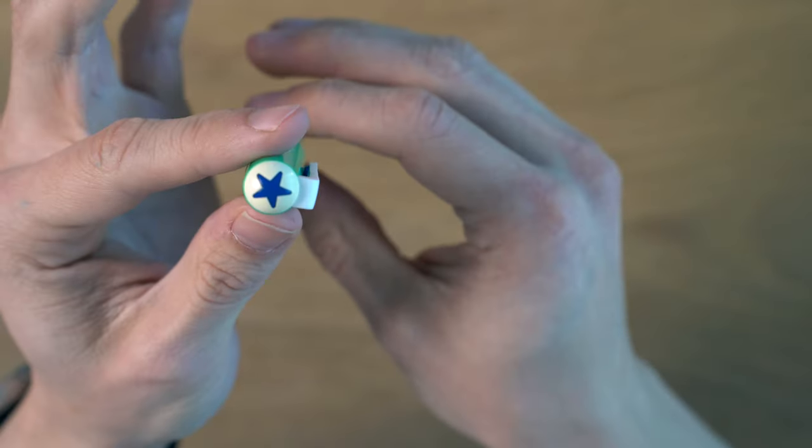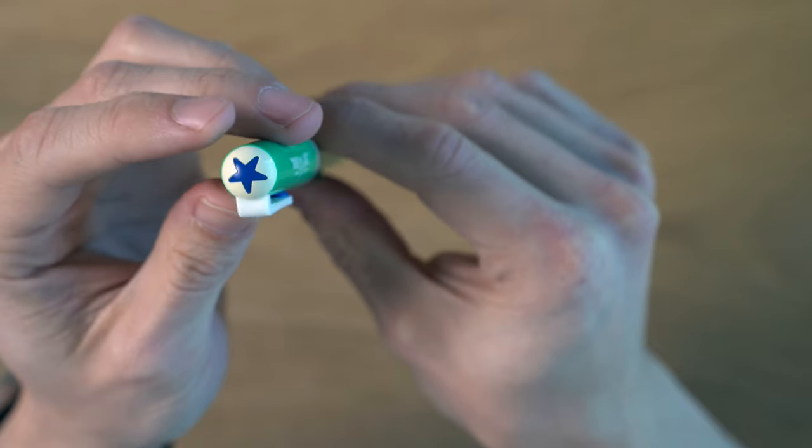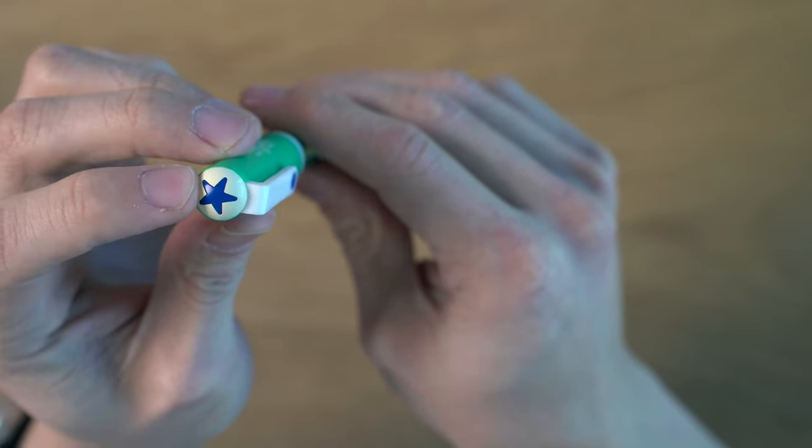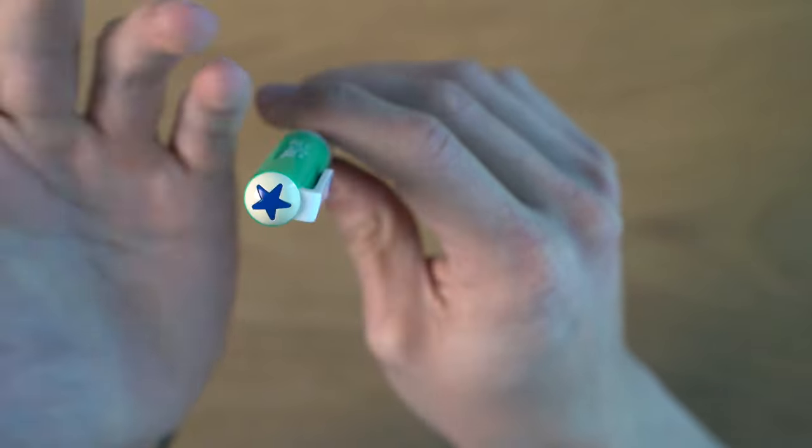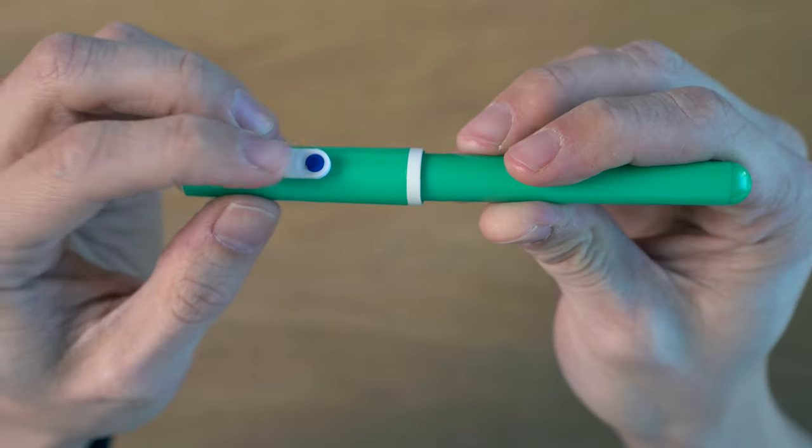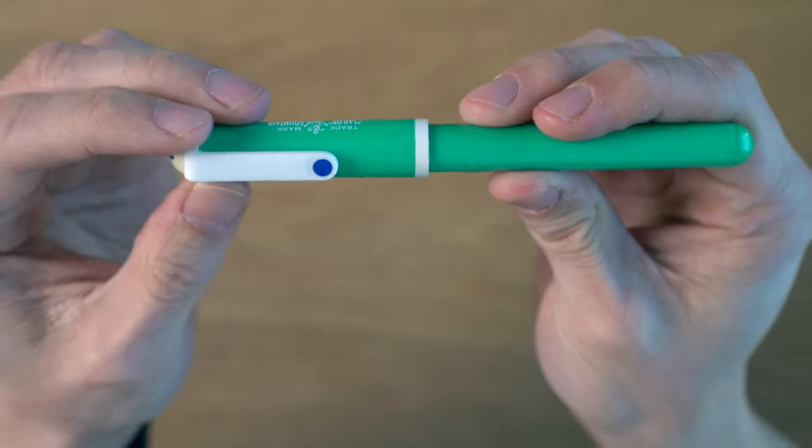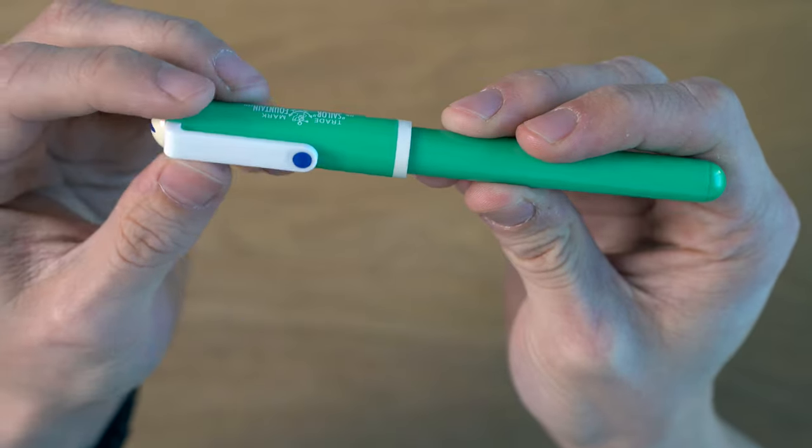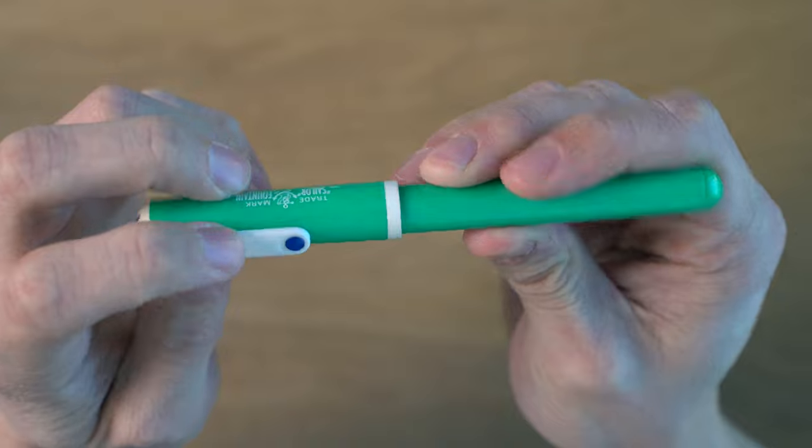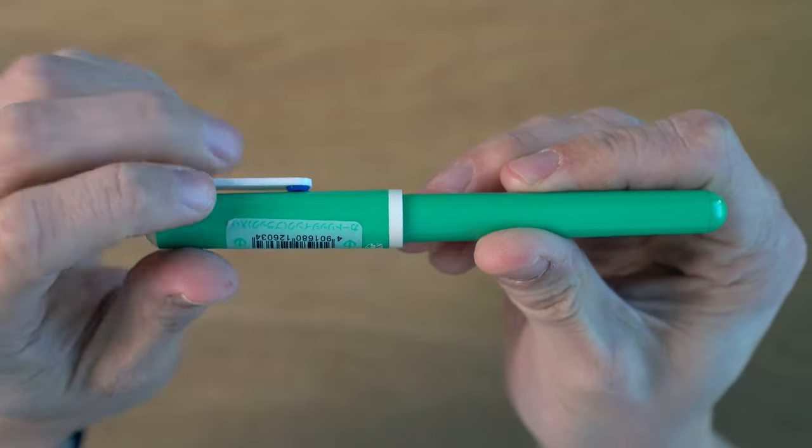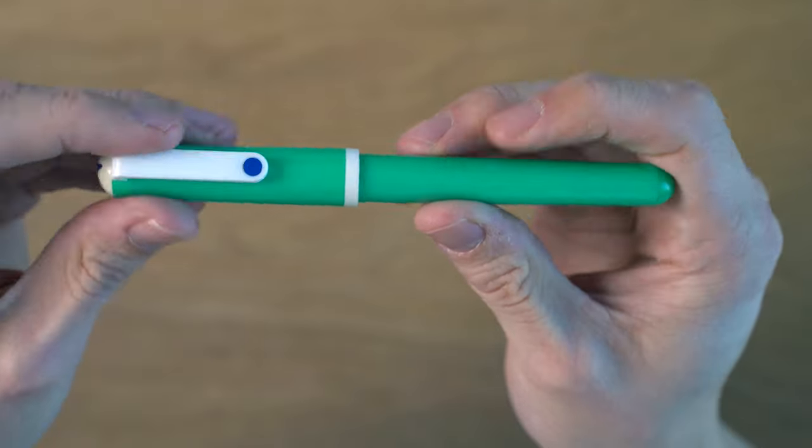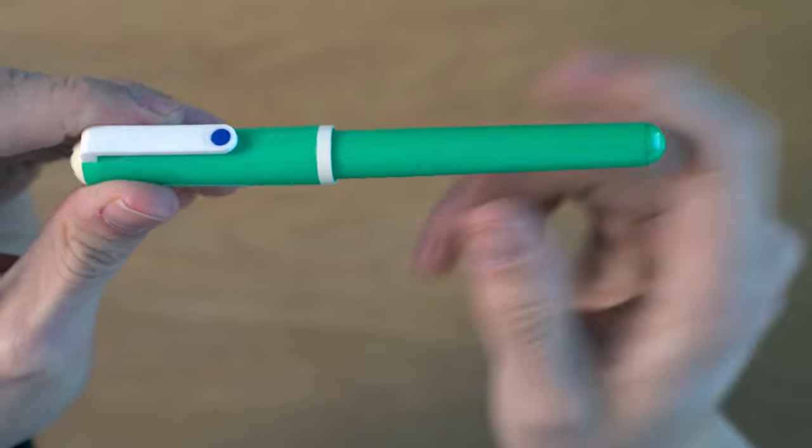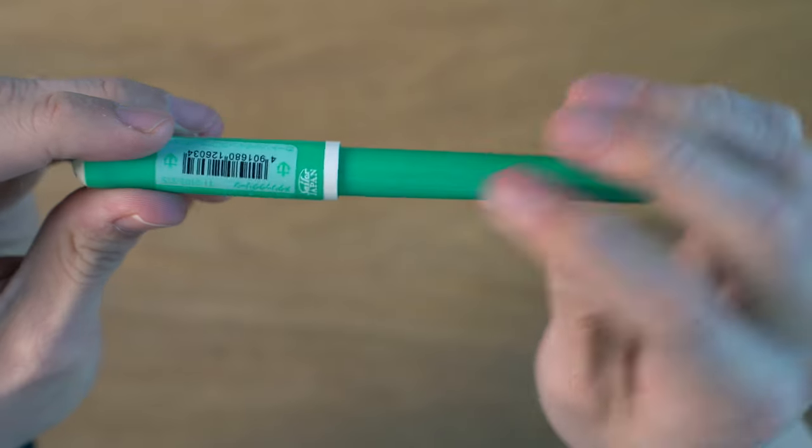Now going to the cap here, the finial, we have this star finial here in blue and white. Looks really cool. Just fun. And then we have a white clip here, which again is very square. There's no taper here, but it does come out into a rounded end. And we have this blue sort of dot here, which comes through to the bottom. It's fun. And then the cap ring is white and we have Sailor Japan.